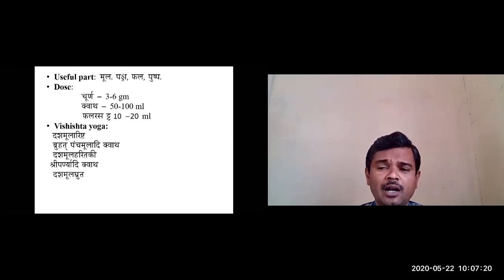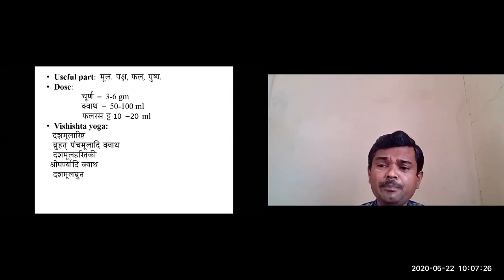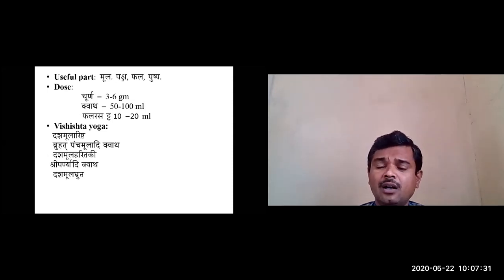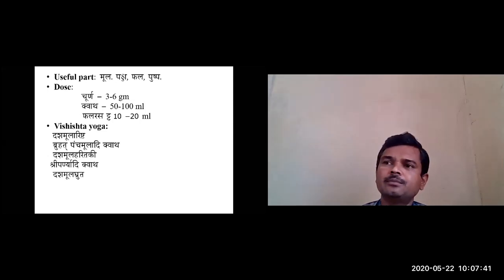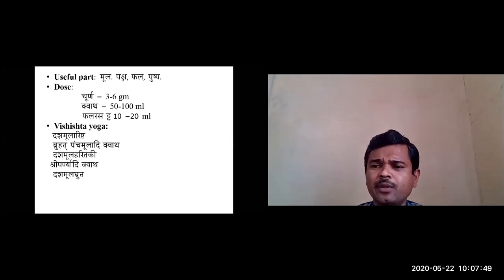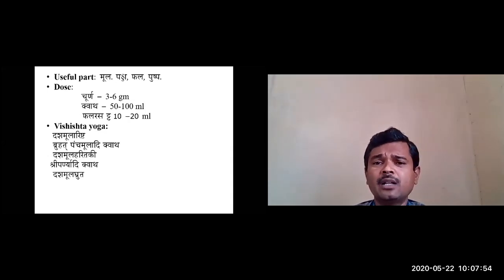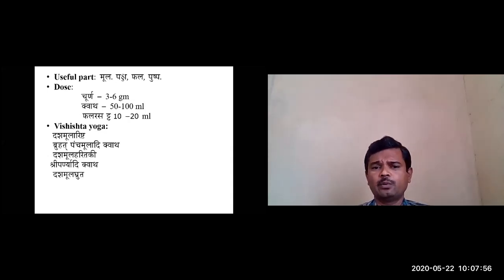The Patra is Kashaya Amla Madhura Rasa, Guru Snigdha Guna, Shita Virya, Madhura Vipaka — that is Vata Pitta Shamaka. The Karma, as Acharya Charaka mentioned, is Shothahara. Acharya Charaka says 'Kashmariya Phalam Rakta Sangrahikam Rakta Pitta Prashamananam Sreshtam' — it is having Rakta Pitta Shamaka, Shothahara, and Daha Prashamana Karma. These are the important Karmas, and the Vishishta Yogas include Dasha Moola Arishta and Dasha Moola Haritaki. This concludes today's topic on Gambari.